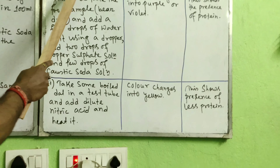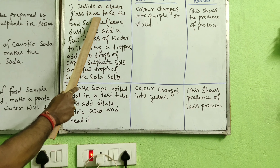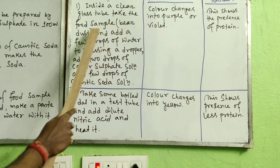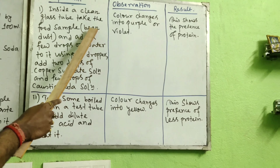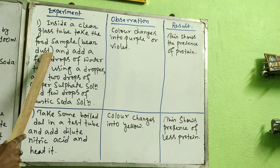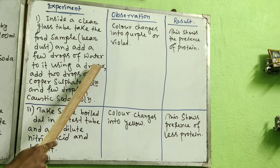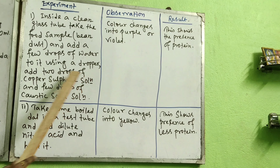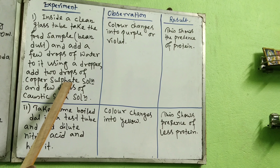In the experiment, take the food sample inside a glass test tube. I have taken bean dust here. You can take beans at home and make dust from them. Add a few drops of water to it using a dropper. Then first add two drops of copper sulfate solution, which you have already prepared — the copper sulfate solution has a blue color.